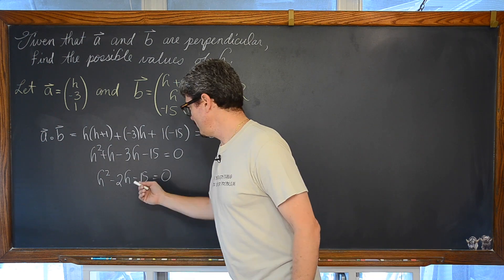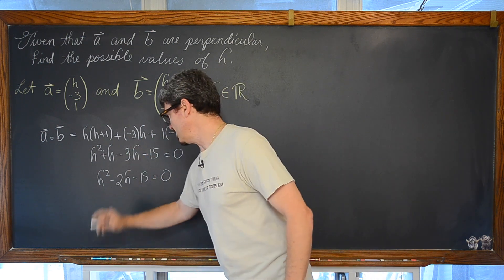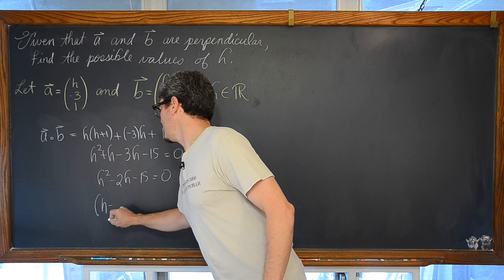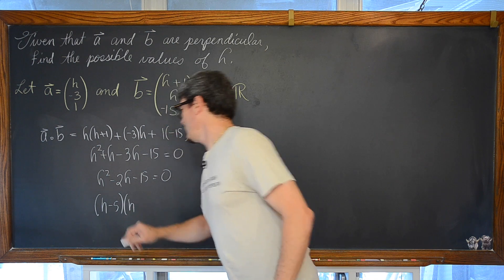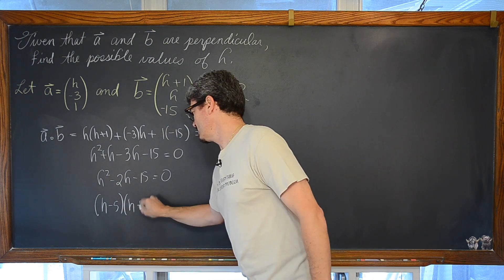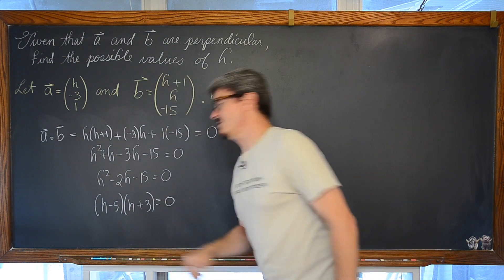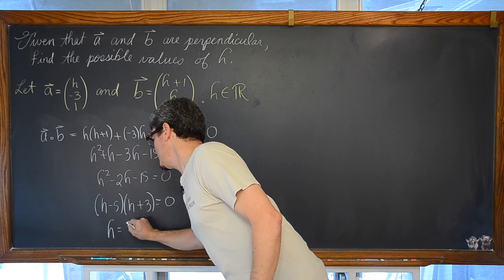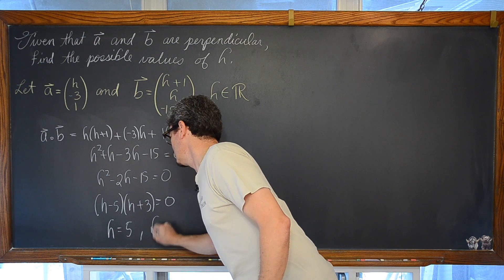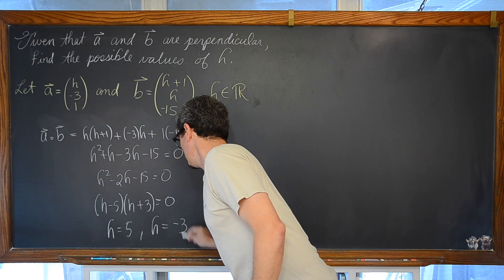This is a factorable quadratic. Factors of negative 15 that add to negative 2 are negative 5. So, h minus 5 and positive 3. So, h plus 3 is equal to zero. That is going to give us our final possible values of h to be either 5 or h can be equal to negative 3.